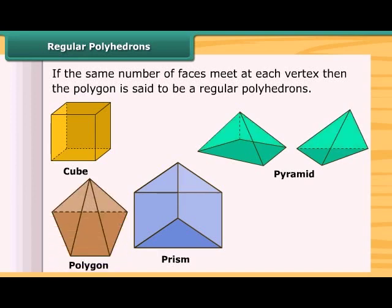If you join all the corners of a polygon to a point not in its plane, you get a model for pyramid.